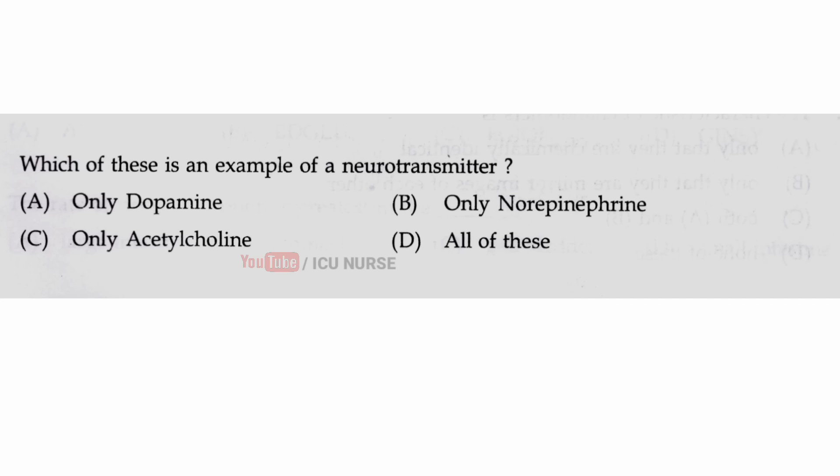Which of these is an example of a neurotransmitter? The correct answer is D, all of these. Dopamine, acetylcholine, and norepinephrine are all examples of neurotransmitters.